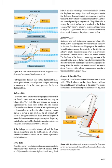Balance tabs look like trim tabs and are hinged in approximately the same places, but the essential difference is that the balance tab is coupled to the control surface rod so it automatically moves in the opposite direction when the primary control surface is moved. The airflow striking the tab counterbalances some air pressure against the primary control surface, enabling the pilot to move and hold the control more easily. If the linkage between the balance tab and the fixed surface is adjustable from the flight deck, the tab acts as a combination trim and balance tab.